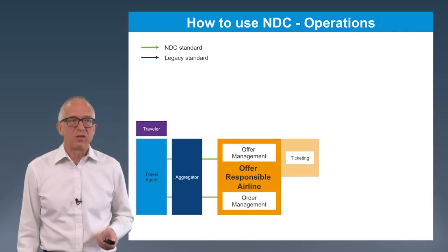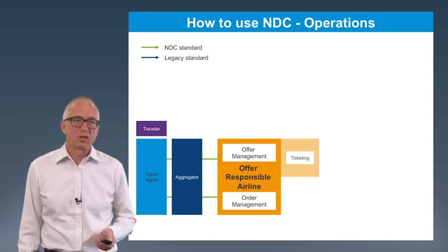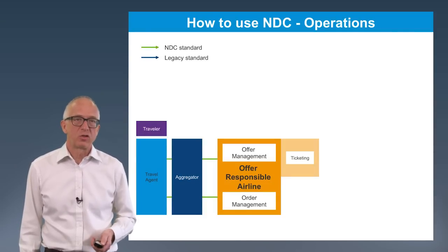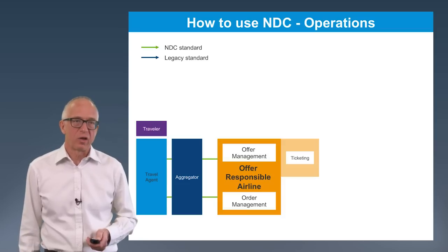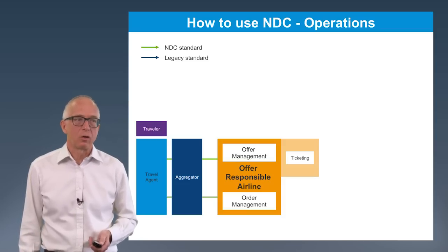So how does an NDC order and ticket actually allow the passenger to travel? What's the downstream process? What is called airline operations?